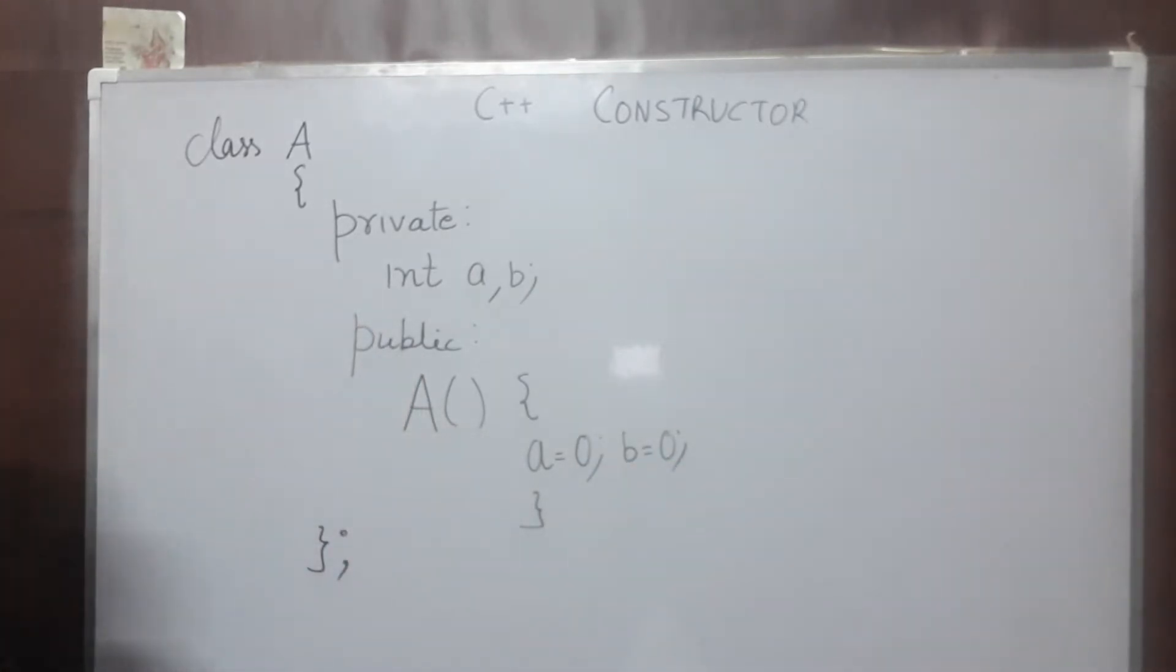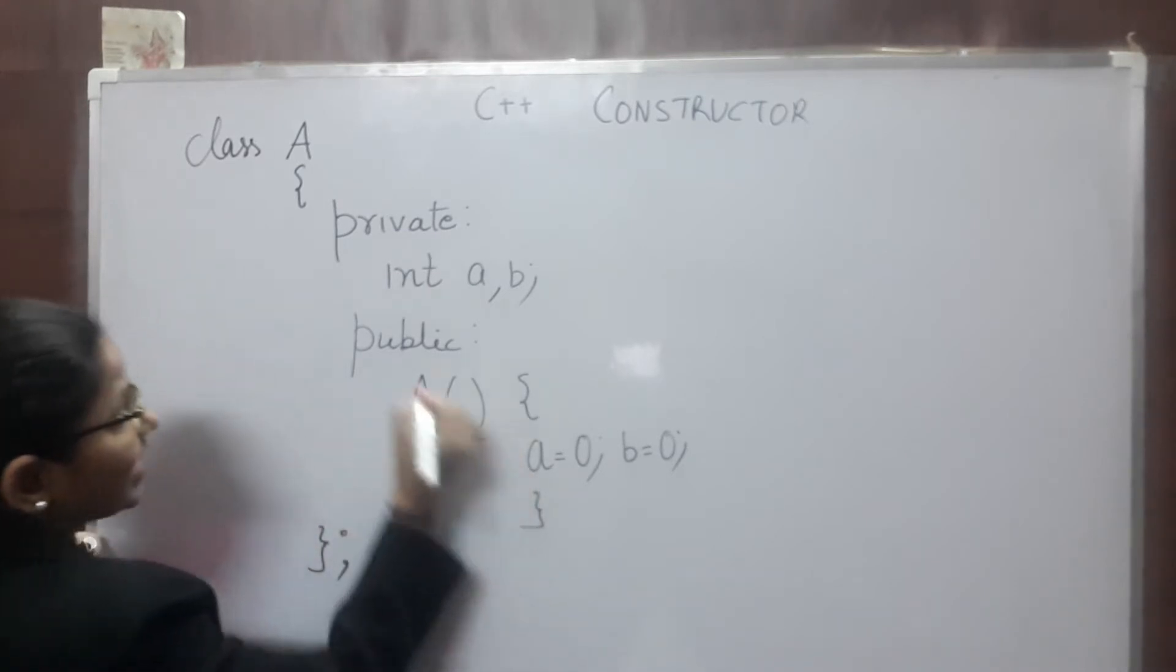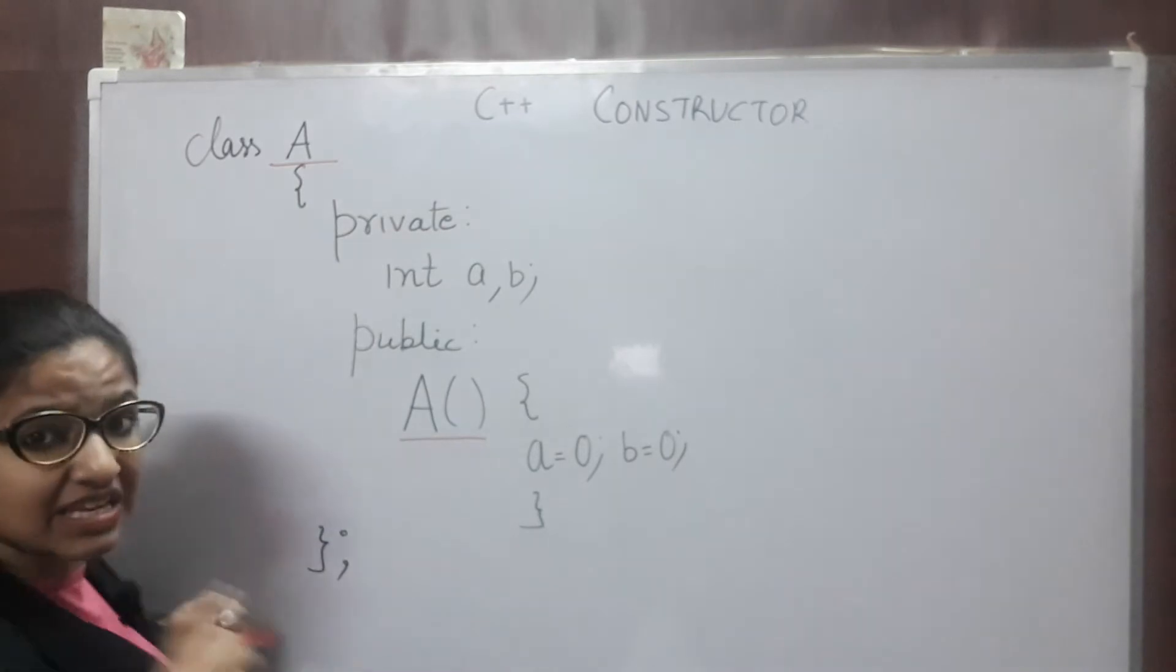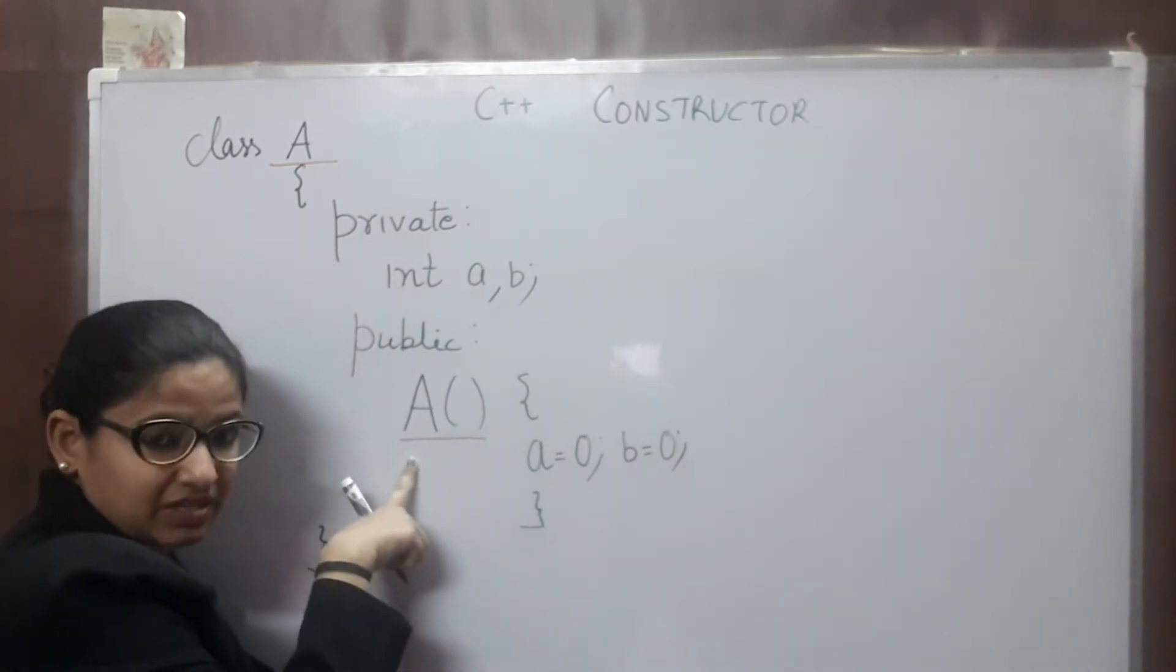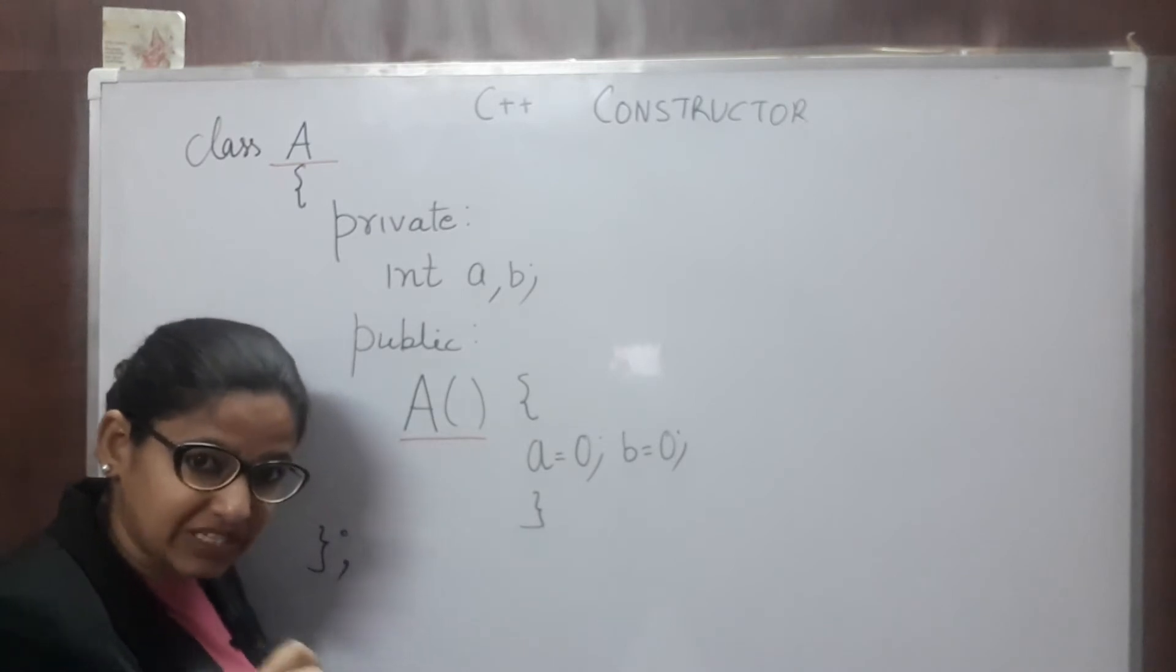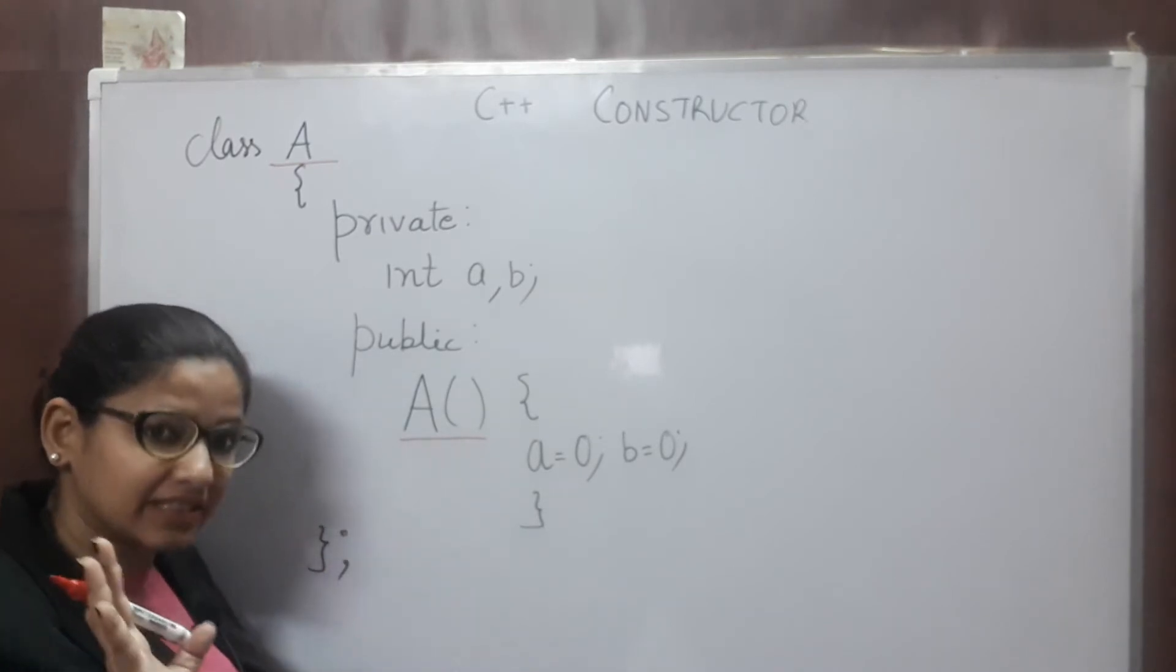So, as you can see, the name of this member function and the name of this class is same. They both are same. So, this is your Constructor. First property of Constructor is its name is same as your class name.